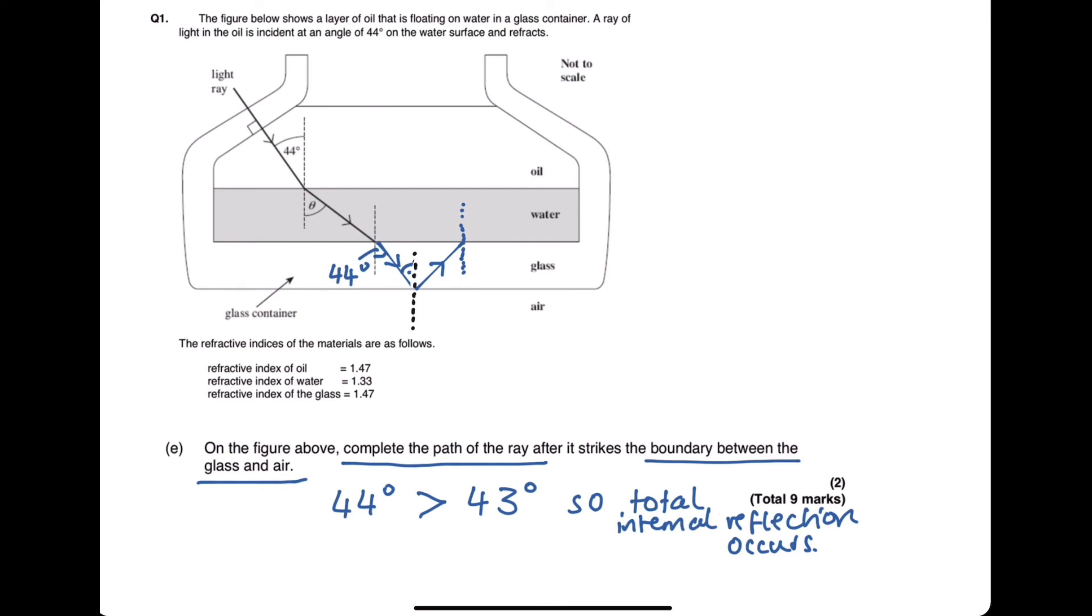Then at the next boundary we've drawn a normal again. Now glass to water, water has a lower refractive index than glass so this ray is going to bend away from the normal slightly until it reaches the oil and again we've done another normal line. Now oil has a greater refractive index than water so the ray bends towards the normal and it actually continues straight when it hits the boundary between the oil and the glass and that is because the oil and glass have exactly the same refractive index.